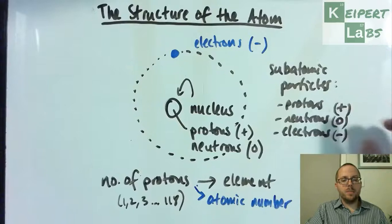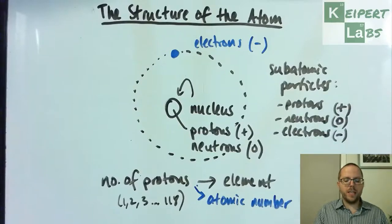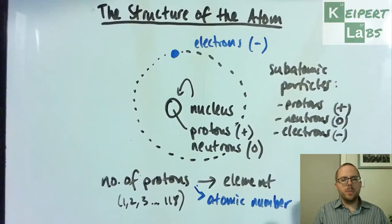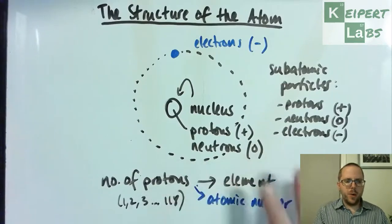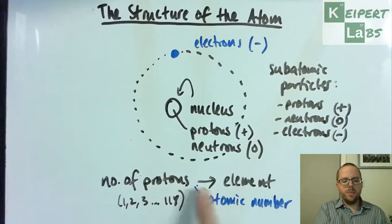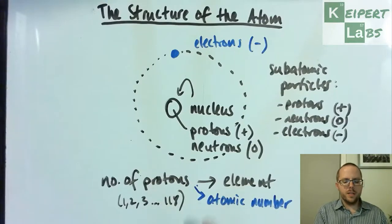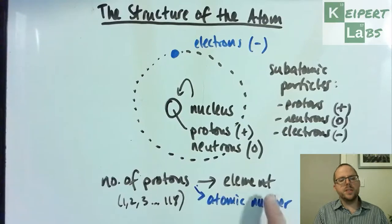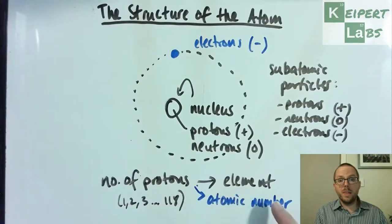We will see again in a future video how these numbers vary, how they connect together, and also a little bit more about where they are and so on. But for now, we're working from a simple starting point. We're recognizing that the number of protons inside the nucleus dictates or decides which element that atom belongs to, and that we call its atomic number.